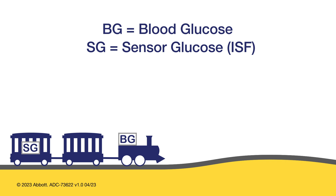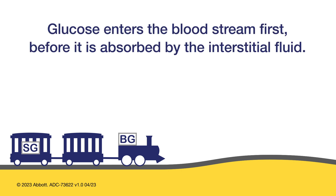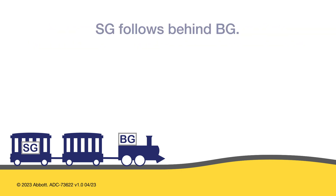Imagine that the hills and bumps on the track are like the changes in your glucose levels throughout a typical day. As carbohydrate is digested, glucose enters the bloodstream first before it is absorbed into the interstitial fluid. So blood glucose is in the front of the train. Since glucose travels from the blood into the interstitial fluid, sensor glucose follows behind blood glucose.